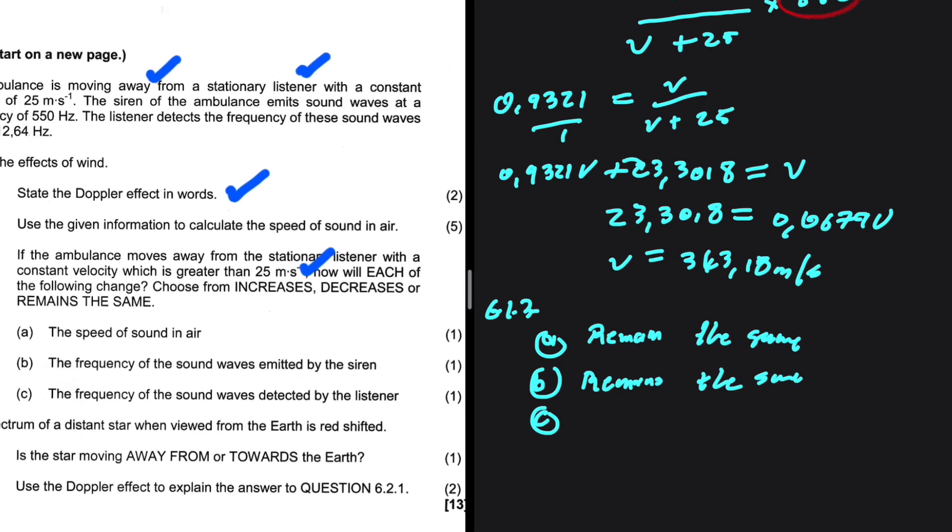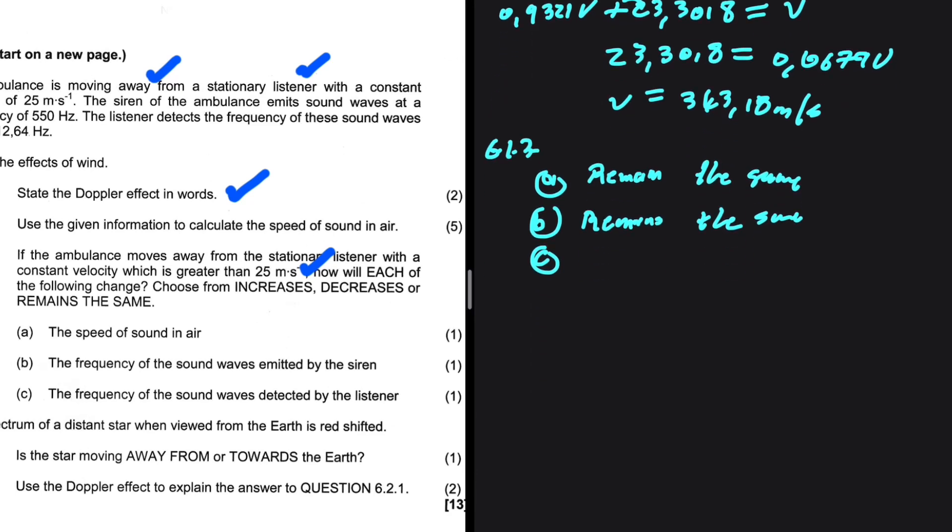Now let's look at C. The frequency of the sound waves detected by the listener. Take a look at our equation. We had FL being equals to V divided by V plus VS multiplied by the frequency of the source. As you can clearly see, if the velocity of the source increases, we're going to have a way greater denominator. Then if you increase the denominator, the number as a whole is decreasing. So the frequency of the listener would decrease. So the answer to C is it decreases. We can clearly see that from our equation.